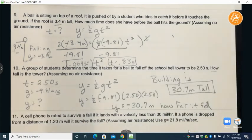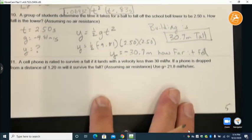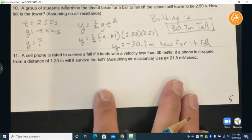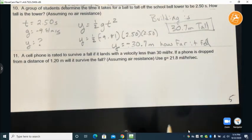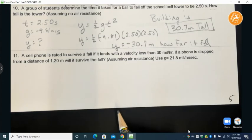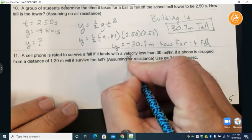Number eleven, a cell phone is rated to survive if it lands with a velocity less than 30 miles per hour and these are numbers that I just made up for this problem so it's not a true value. If a phone is dropped from a distance of 1.2 meters will it survive that fall?